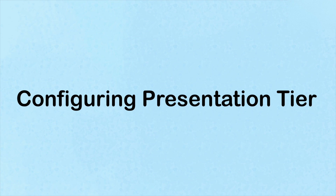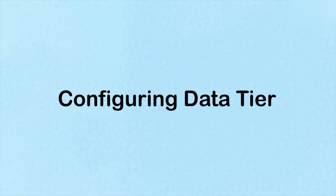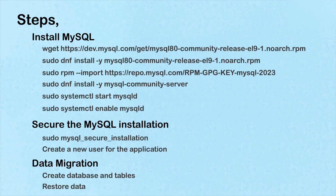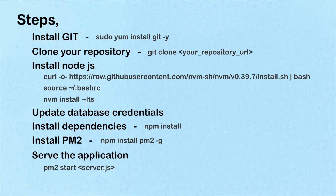Now that our infrastructure is in place, it's time to deploy our application. We'll start by configuring our presentation tier EC2 instance — this process is similar to our previous video, so I'll outline the steps for you to follow. Next, we'll configure our data tier; I'll outline the steps and you can follow along. With our presentation and data tiers configured, we'll focus on setting up the application tier. I'll outline the steps and you can follow along.